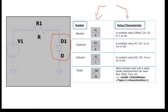Before doing anything, I want to share my opinion about how components are defined in LTSpice software. For example, if we want to define a resistor in LTSpice, in my opinion we need to have a symbol and then define a value for that symbol. After we define the symbol and value, we have finished defining the resistor.